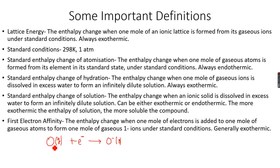The first electron affinity is generally exothermic because we usually consider it for non-metals. Since non-metals want to receive electrons, they readily take in one mole of electrons to attain stability and complete their octet. Because electrons are readily added to the oxygen atoms, energy is released, and therefore it is generally exothermic.